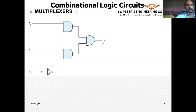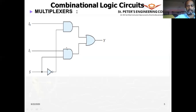So when S is 0, I0 is selected: if I0 is 0, output is 0; if I0 is 1, output is 1. When S equals 1, the complement is 0, so the AND gate for I0 outputs 0. The true value of S (which is 1) goes to the AND gate for I1, so that gate outputs I1. By using just one select line, we can select between two input data lines and present it at the output.